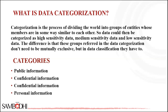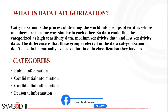The next type is confidential information. This data may have legal restrictions about the way it is handled, or there may be other consequences around the way confidential data is handled.